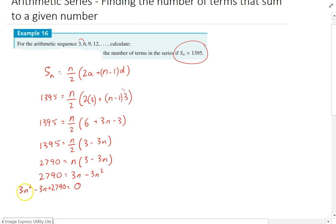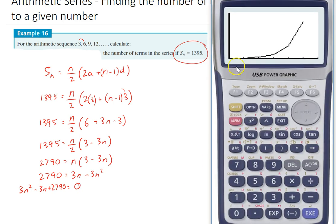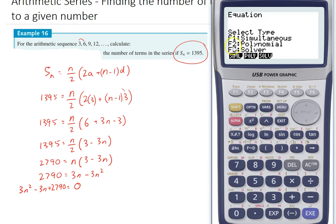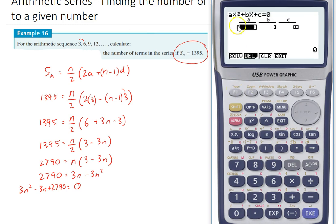I could solve that by factorizing it, I could solve it by completing the square, I could solve it by using the quadratic formula, I could solve it by using my graphics calculator, which I think that's what I'll do. All right, so equation mode, it's a polynomial degree two. I'm just going to put in my a, b, and c values: 3, negative 3, and 2790.